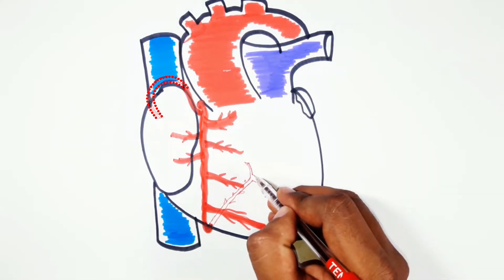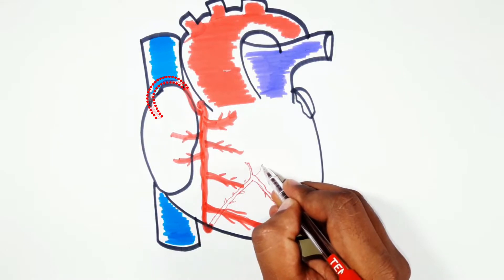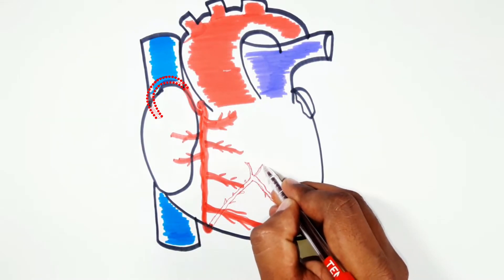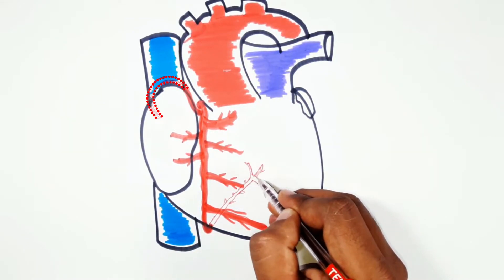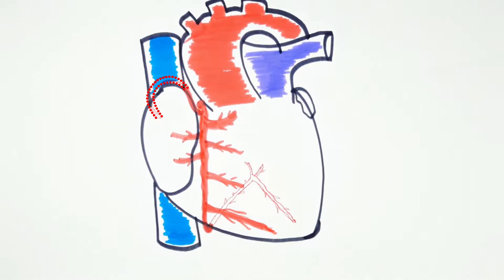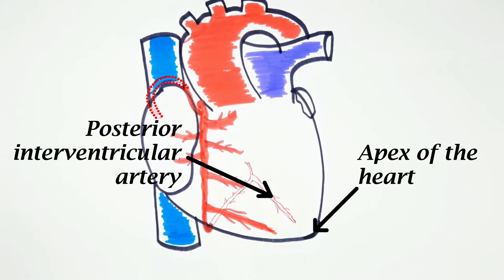A small branch is given which anastomoses with the circumflex artery from the left coronary artery. The posterior interventricular artery runs in the interventricular groove towards the apex of the heart.